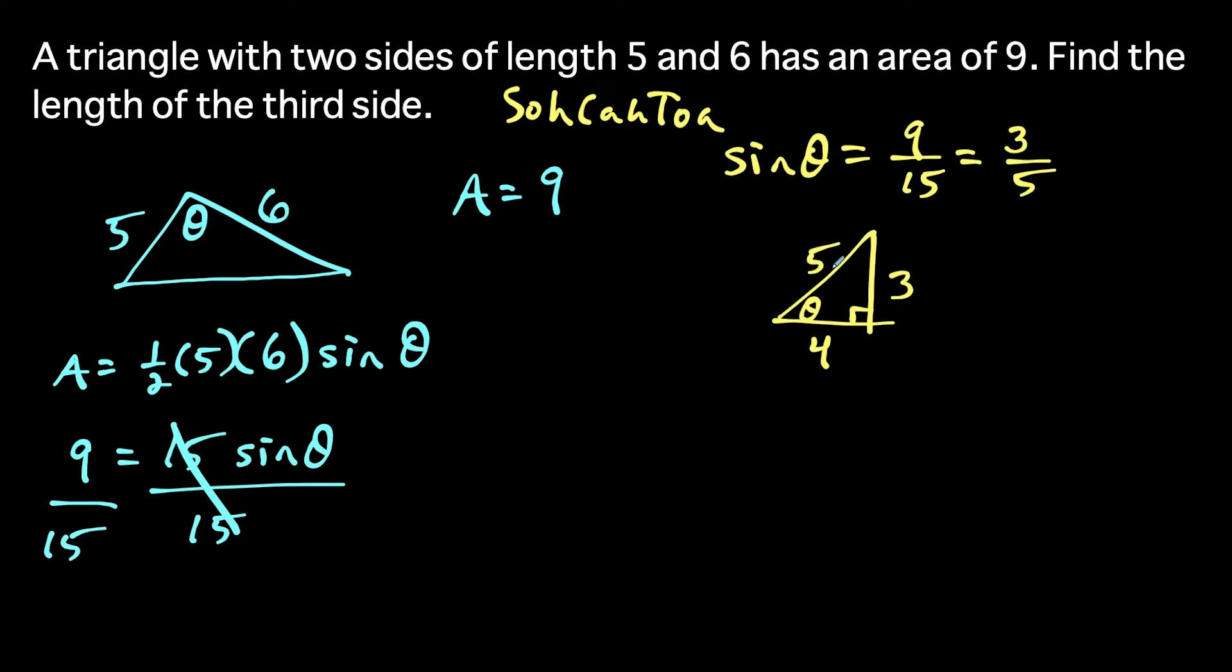And what I want to do from here, this might seem a little bit abstract, like why are we looking at this triangle here? Well, if we know sine theta is three over five, that tells us that cosine theta is going to equal four over five.